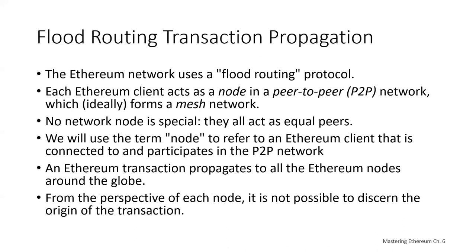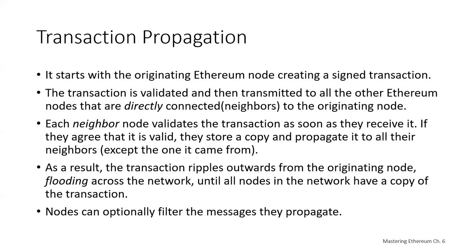The neighbor that sent a transaction to a node might be the originator, or it might have received it from another neighbor. To track the origins of transactions or interfere with propagation, an attacker would have to control a significant percentage of all nodes. This is part of the security and privacy design of peer-to-peer networks as applied to blockchain networks.